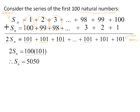We can then work out what 100 times 101 is, divide both sides by 2, and we get the sum of the series to be 5050.